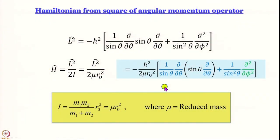We are studying the rigid rotor and trying to set up the Schrödinger equation for it. We have arrived at the same Hamiltonian in two different ways. Starting with the L² operator, we realized the Hamiltonian is L² divided by 2I, giving us minus ħ²/2μr₀² multiplying (1/sinθ)(∂/∂θ)(sinθ ∂/∂θ) plus (1/sin²θ)(∂²/∂φ²).